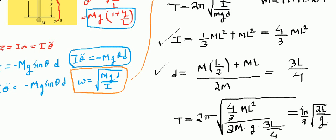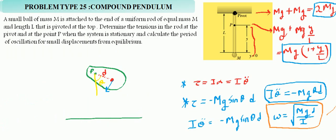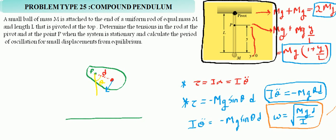I hope you understood the concept of compound pendulum and how to apply it to systems like this. In your questions there may be many types of systems. The main thing to remember is calculating the correct moment of inertia, since the formula for omega is the same for all compound pendulums. All you need to find is I, the center of mass distance D, and the total mass M — then you can easily calculate the time period.